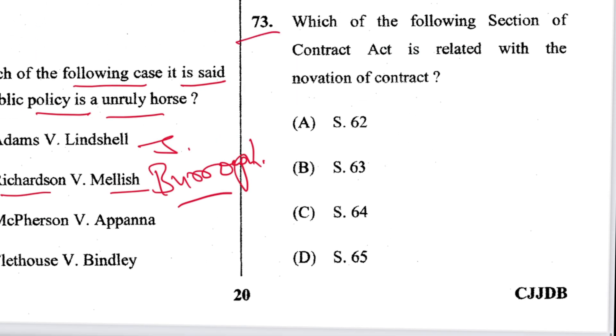Question 73: Which section of the Contract Act is related to the novation of contract? That is Section 62. A is the answer.